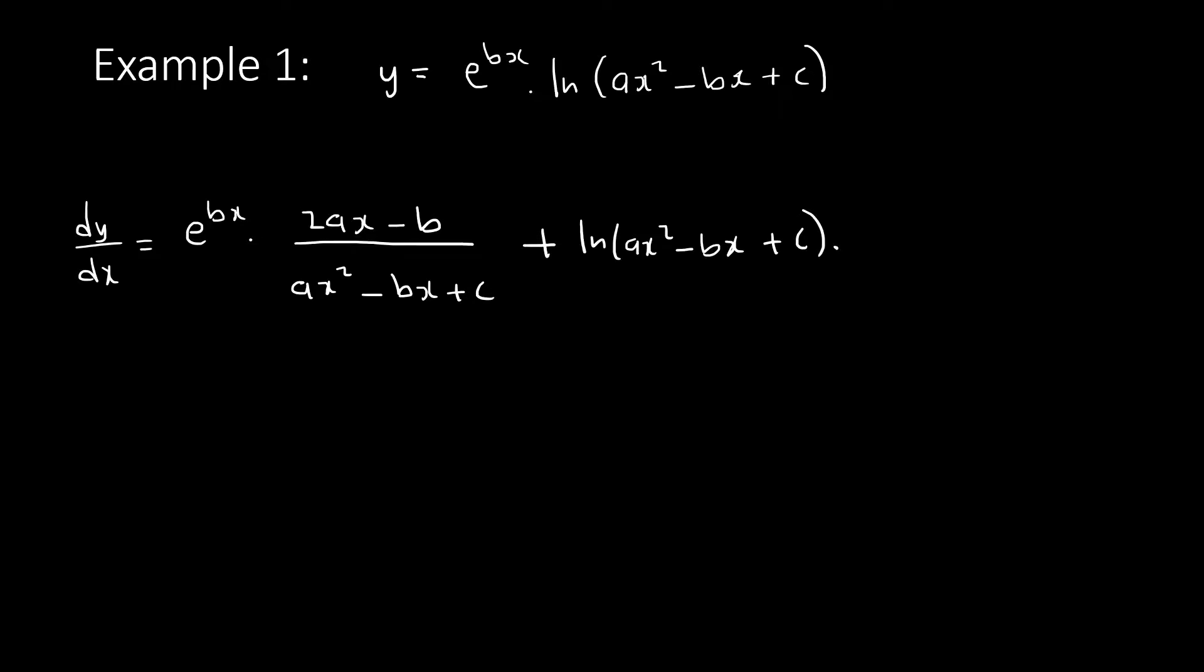Plus v times the derivative of e. The derivative of e, first step you write it as it is, times the derivative of the exponent which is b. Then you are done, that's your product rule.